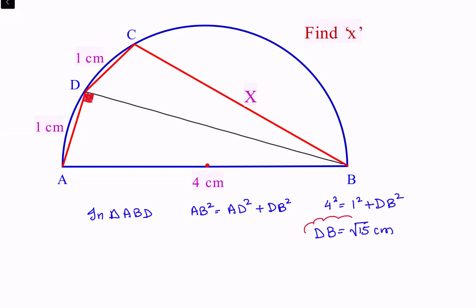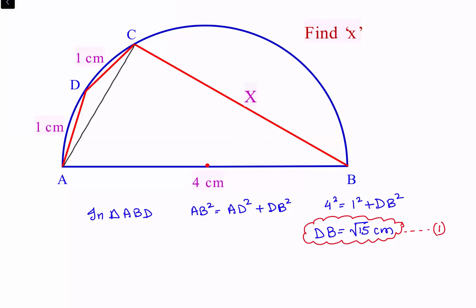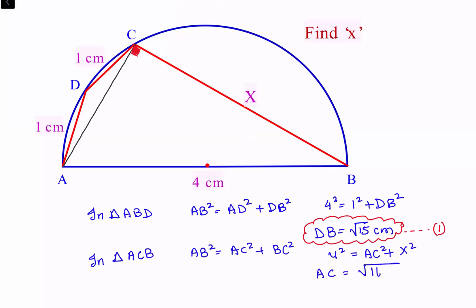We get DB = √15 cm. This is observation number 1. Same way we can draw one more right angle triangle. If we join AC, angle ACB is the angle subtended by the diameter, so this angle is 90 degrees. In triangle ACB: AB² = AC² + BC², so 4² = AC² + X², giving AC = √(16 − X²).